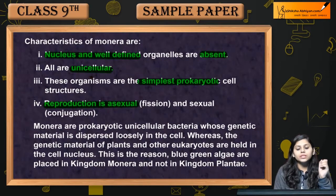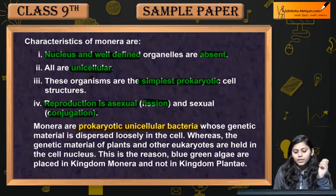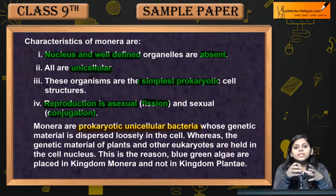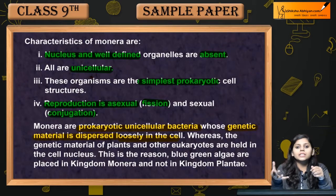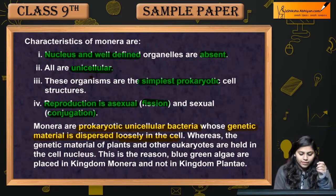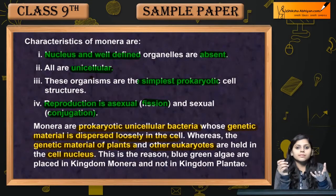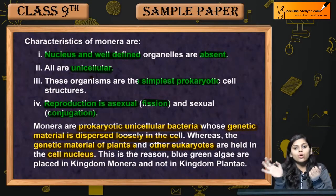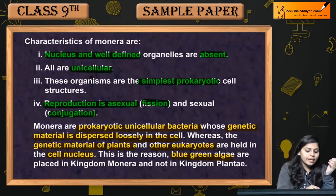Monerans reproduce asexually by fission and sexually by conjugation. Monerans are prokaryotic, unicellular bacteria. Prokaryotic means membrane-bound organelles are absent. They are single-celled organisms whose genetic material is dispersed loosely in the cell, whereas in plants and other eukaryotes, genetic material is held in the nucleus. Blue-green algae also lack membrane-bound organelles and have dispersed genetic material, which is why they are classified as Monerans and not plants.